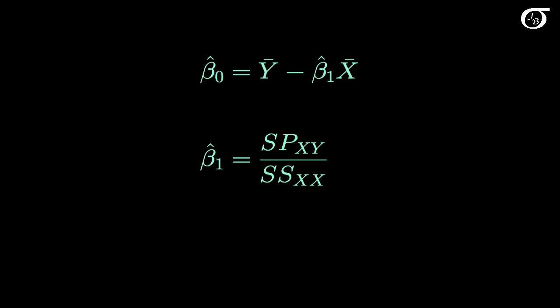And now we're ready for the formulas. So if we go ahead and do that minimization properly, we would see that beta0 hat is equal to the mean of Y minus beta1 hat times the mean of X. And beta1 hat is equal to the sum of products over the sum of squares for X.